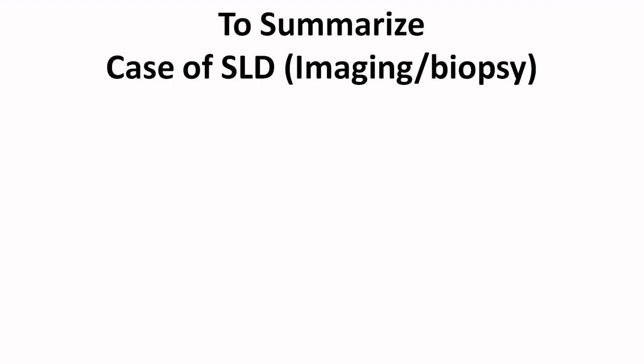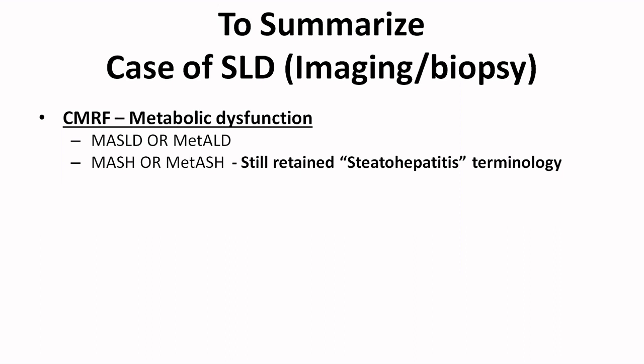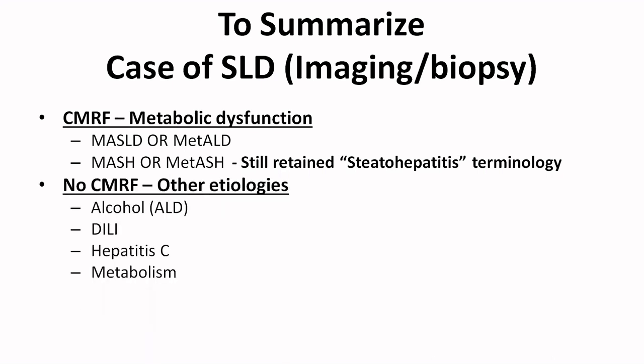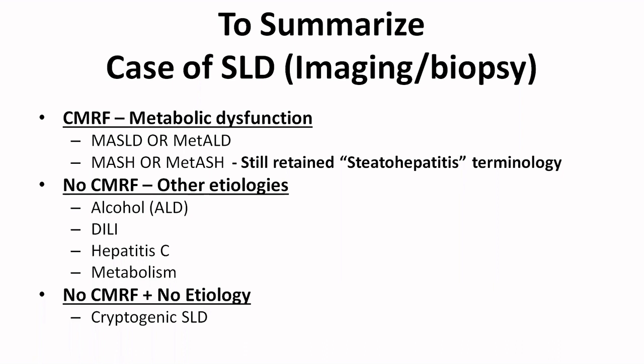To summarize the diagnostic algorithm: a patient presents with imaging or biopsy diagnosis of steatotic liver disease. First, assess cardiometabolic risk — if at least one of five factors is present, it is MASLD; if coexisting alcohol is present, it is metabolic dysfunction with alcohol-related liver disease; if another etiology is present, it is combination etiology. Steatohepatitis terminology is preserved, so metabolic dysfunction associated steatohepatitis can be applied based on fibrosis score. If no cardiometabolic risk factors and no identifiable etiology are present, the patient has cryptogenic steatotic liver disease.